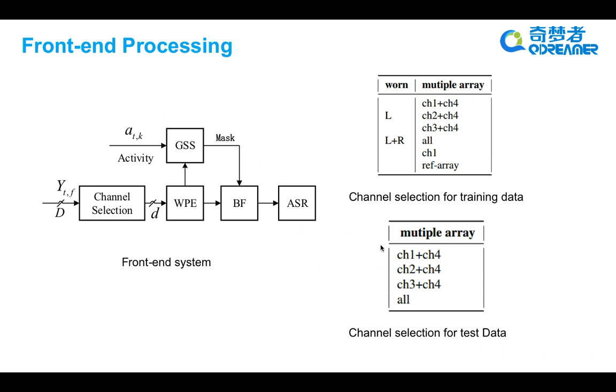As we can see in the right table, the label L stands for that only left channel is selected for each array. And the label L plus R stands for that both left and right channels are selected.